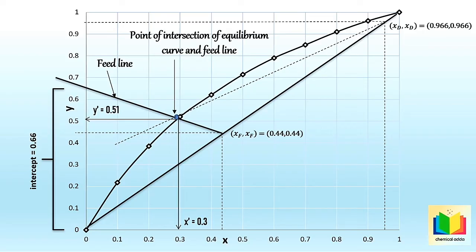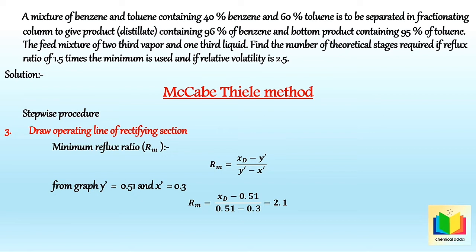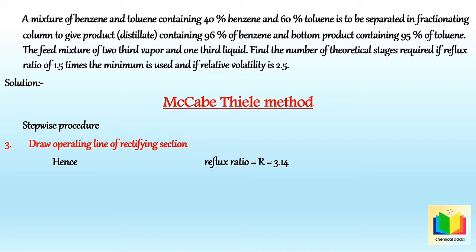Now we can calculate the minimum reflux ratio rm. From the graph, y' = 0.51 and x' = 0.30. So rm = (0.966 - 0.51) / (0.51 - 0.30) = 2.1. Now we can calculate the actual reflux ratio r from the given relation: r = 1.5 * rm = 1.5 * 2.1 = 3.14.